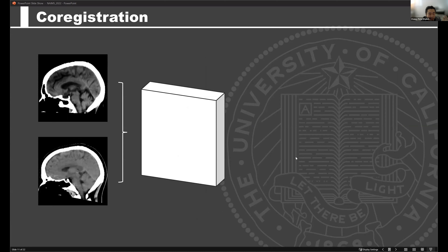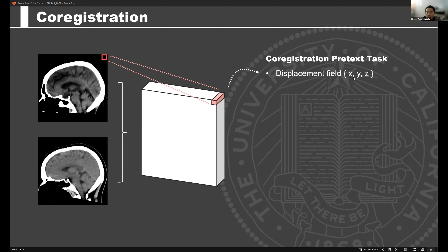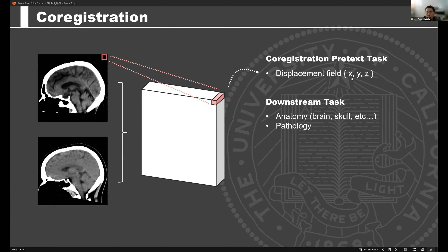This is very similar to a co-registration task. In a standard co-registration deep learning task, I would feed my model two images and get a feature vector correlated to a displacement field telling me how much I need to move to align one location to another. Though similar, it's a bit different from what I'd like, because ultimately I want pretext tasks usable for something interesting downstream — like anatomy segmentation, landmark detection, or pathology identification. The fact that the feature vector varies based on two arbitrary images means I could move one image and the displacement field completely changes, which is not as useful for reusing feature vectors downstream.